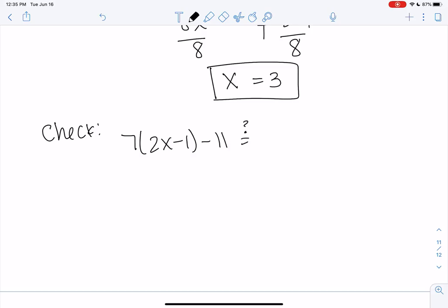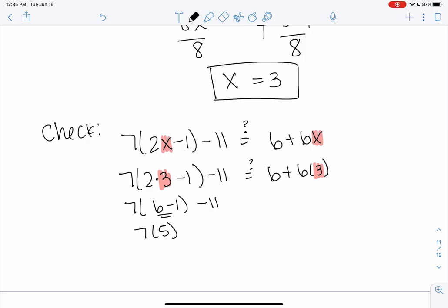So just copying the original equation. And we're just going to plug in 3 for x and make sure both sides are the same. If you feel good with your calculator, you could actually just type it all at once. But otherwise, we can just simplify it. So we get 6 minus 1. Now I'm following order of operations. Inside parentheses, 6 minus 1 is 5. So 7 times 5 minus 11. We get 35 minus 11. Which is what? 24?